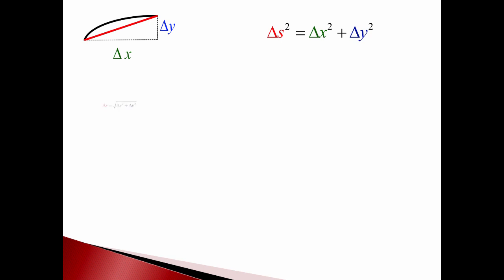If we take the square root, then we get the length of that hypotenuse, the red line segment, is the square root of delta x squared plus delta y squared. Then we just need to add those up.